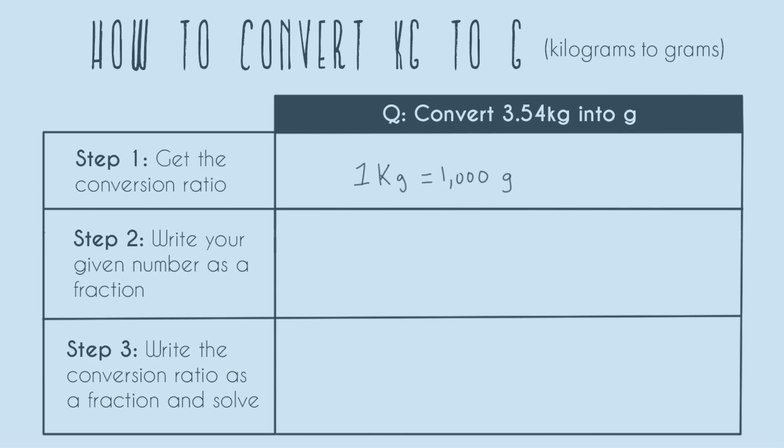Alright, so now that we have that, we're going to write our given number, the number in the problem, so in this case that's the 3.54 number, as a fraction. So we're going to write 3.54, and this is very important, we also have to include the units.